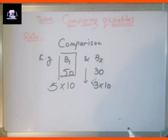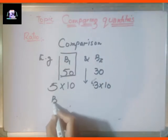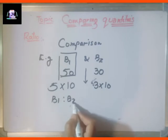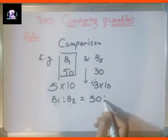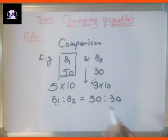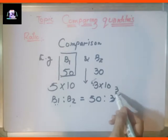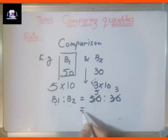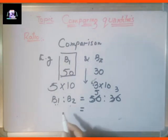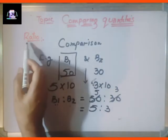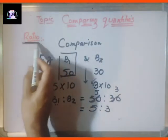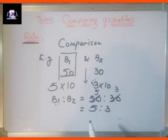So we can write B1 ratio B2, that is B1 is to B2, which is equal to 50 is to 30. We can reduce this: ten fives are 50 and ten threes are 30, so the ratio of the marks of Boy 1 to Boy 2 is 5 is to 3.